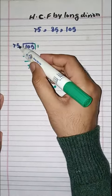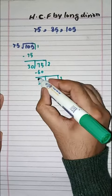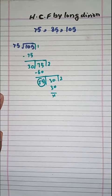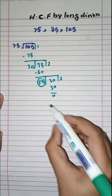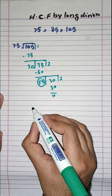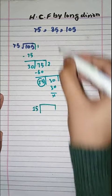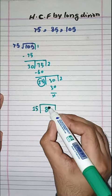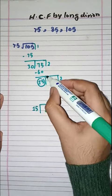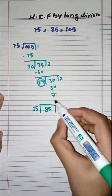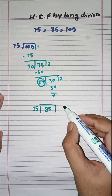So HCF of 75 and 105, what is HCF? 15. Got it? Now we will find HCF of 15 and 85, the remaining number, and 15 the answer of these two, HCF of these two numbers. Got it?